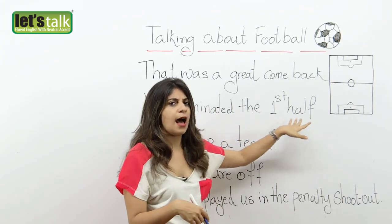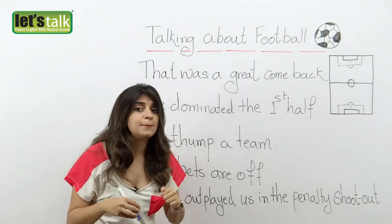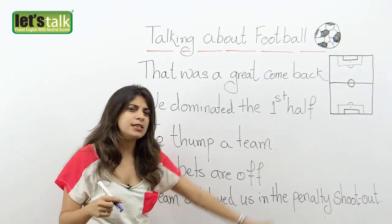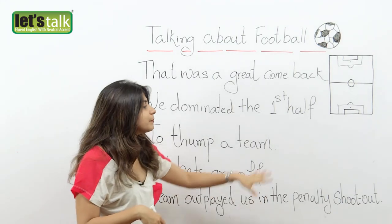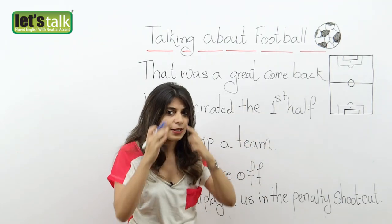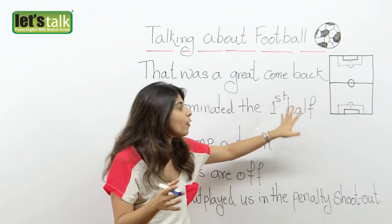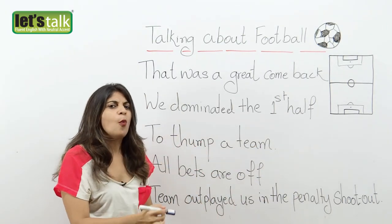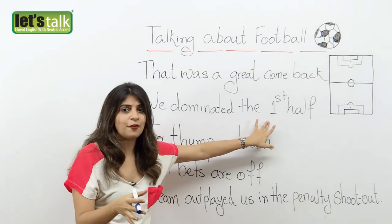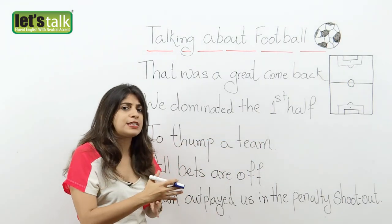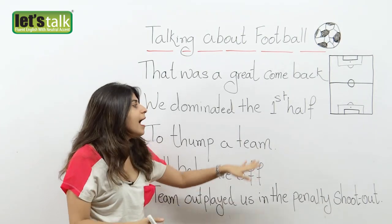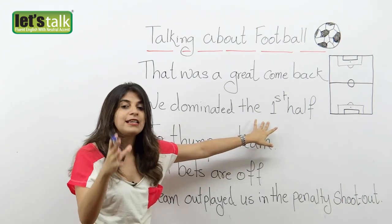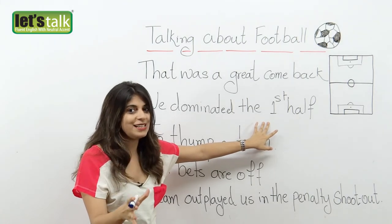Then we have: 'We dominated the first half.' Dominated means to have a commanding position — you ruled the first half. In a game of football, the match is usually 90 minutes, with 45 minutes considered the first half. So maybe a team was doing extremely well in the first half — scoring good goals and defending very well. So you say they dominated the first half, meaning they did really well in the first 45 minutes of the game.